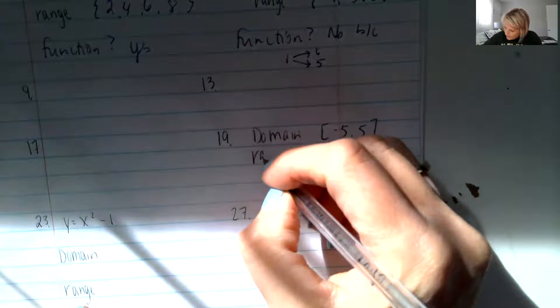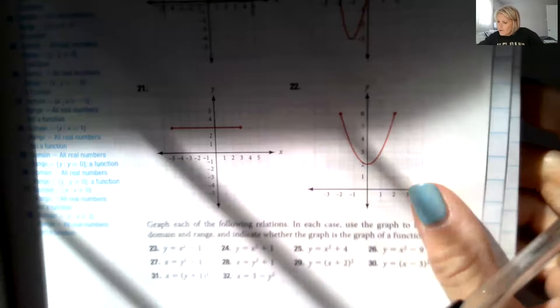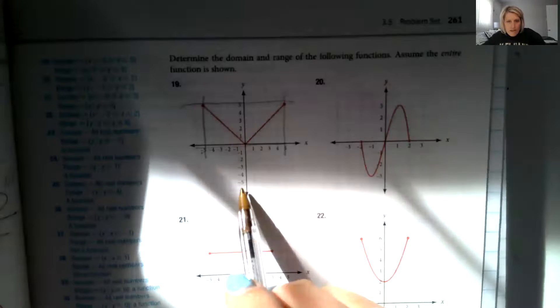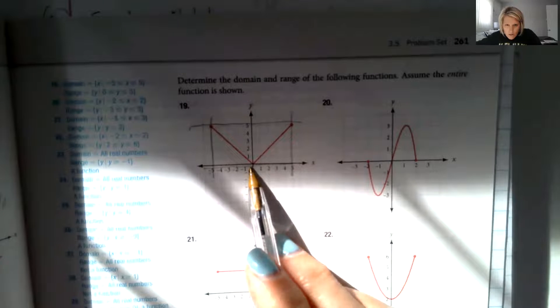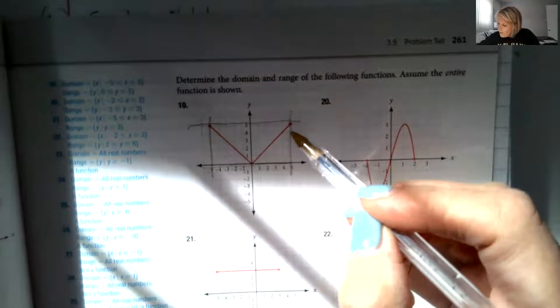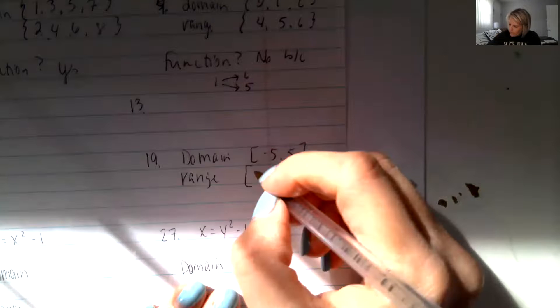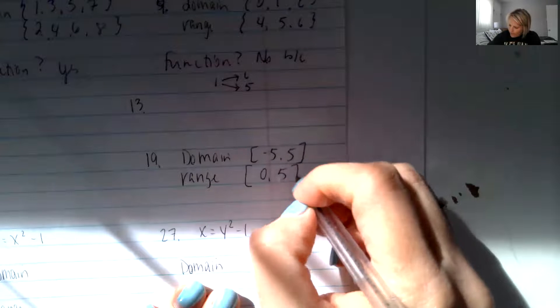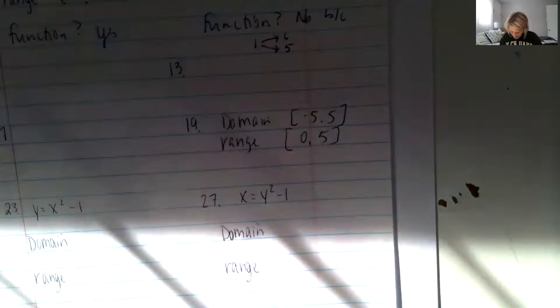And because they're colored in circles, my domain is using brackets. And then my range, or my y values, minimum to maximum. So that looks like the smallest that y can be is zero, and it goes all the way up to five on both of these. So zero and five, and we're going to use brackets.